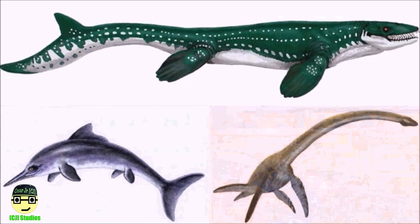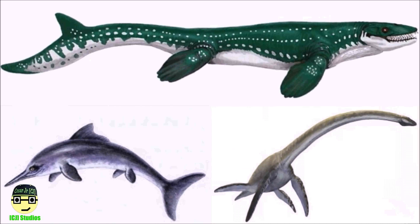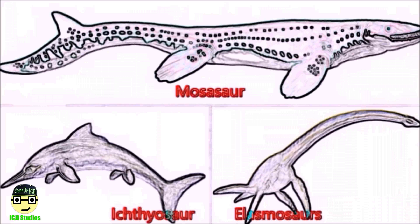The problem is I don't know how to say the names, so I can't really describe what these are. Hey guys, just a little update on this presentation. Now I finally do know how to pronounce these words. As you're looking right now, you can see three of these creatures on your screen. The first creature on the top screen is a mosasaur. The dinosaur on the left side of the screen is an ichthyosaur. And the creature on the right of the screen is an elasmosaurus. Now back to the presentation.